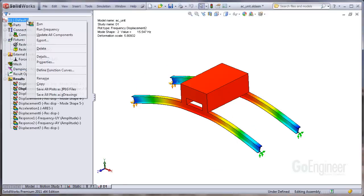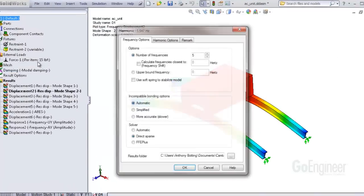Let's go to the properties of the study Harmonic Options tab and click the Advanced Options button.